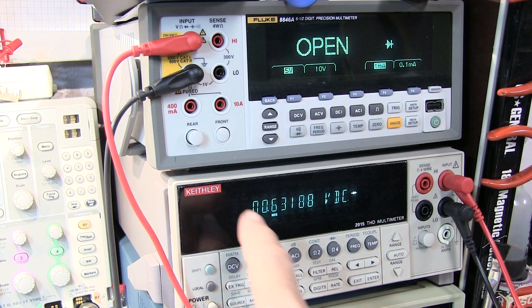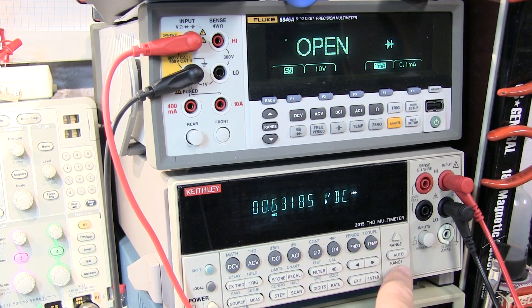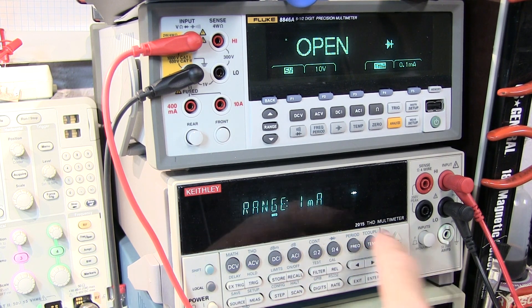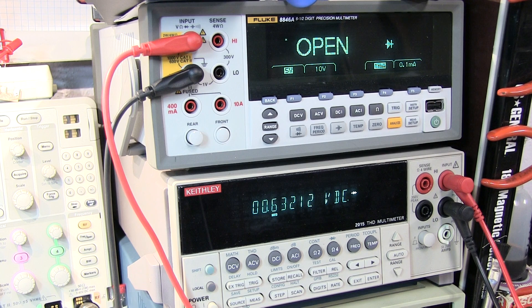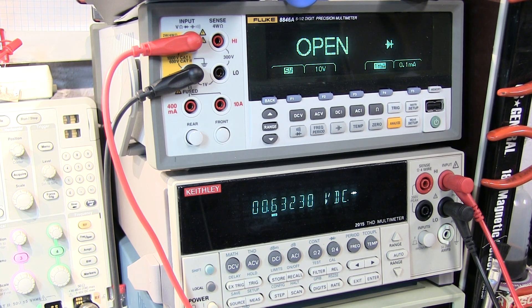Similarly on this Keithley 2015, I've got a choice of, in this case this is the 100 microamp setting, 527 millivolts, and the 1 milliamp setting, 632 millivolts. So in the case of the bench DMMs you have a choice generally of two, sometimes more, different diode current settings, and that may allow you to pick a diode current that is closer to the particular application that you're going to be using the diode in.